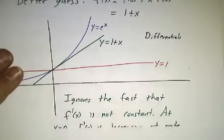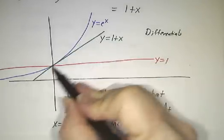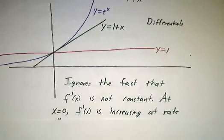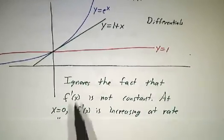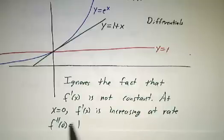But it also ignores something. You see, when we use the tangent line, we're pretending that the slope will be the same forever. In other words, we're pretending that not that f is constant, but we're pretending that f prime is constant. It isn't constant. And in fact, we know how fast it's changing. The rate at which f prime is changing is f double prime and at 0, that's changing at rate 1.